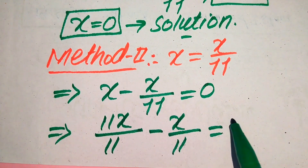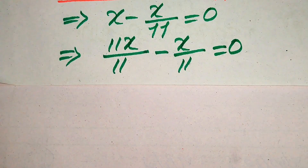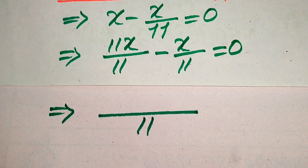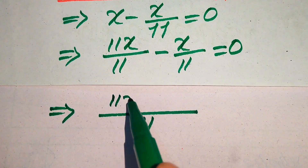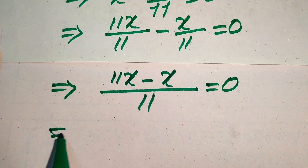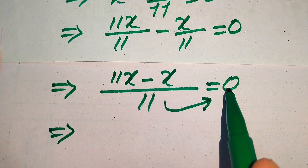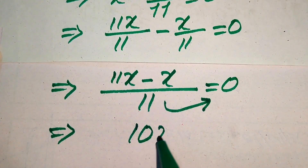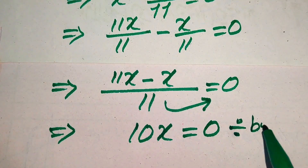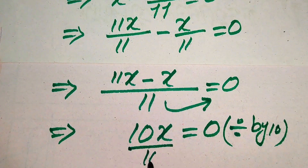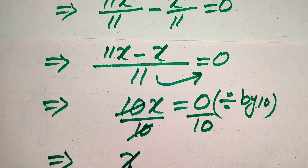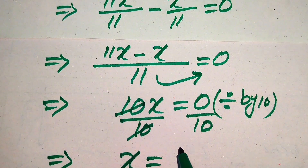So we have 11x divided by 11 minus x divided by 11 equals 0. The denominators are now the same, so we take the LCM. Dividing 11 by 11 gives 11x, and dividing 11 by 11 again gives x, so we get 11x minus x over 11 equals 0. Moving 11 to the right hand side: 11 times 0 is 0, giving 10x equals 0. Dividing both sides by 10, the 10 cancels and we get x equals 0.